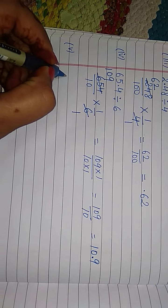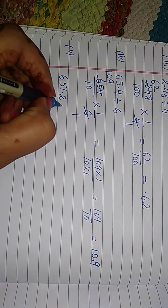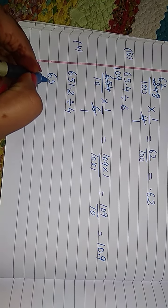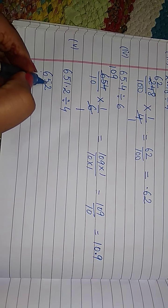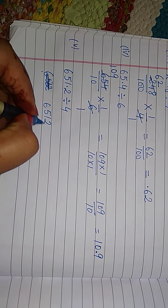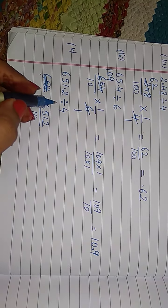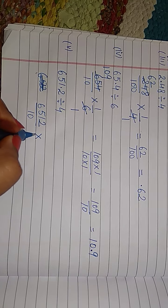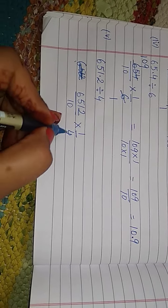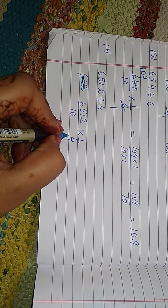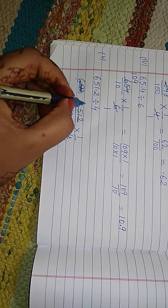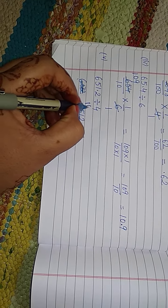That is 651.2 divided by 4. First convert into fraction form. 651, remove decimal, over 10. Then, division sign changes to multiplication. Take reciprocal of 4. That is 1 by 4. Next is cut it. 4 1s are 4. Then, 4 1s are 4. 4 6s are 24.